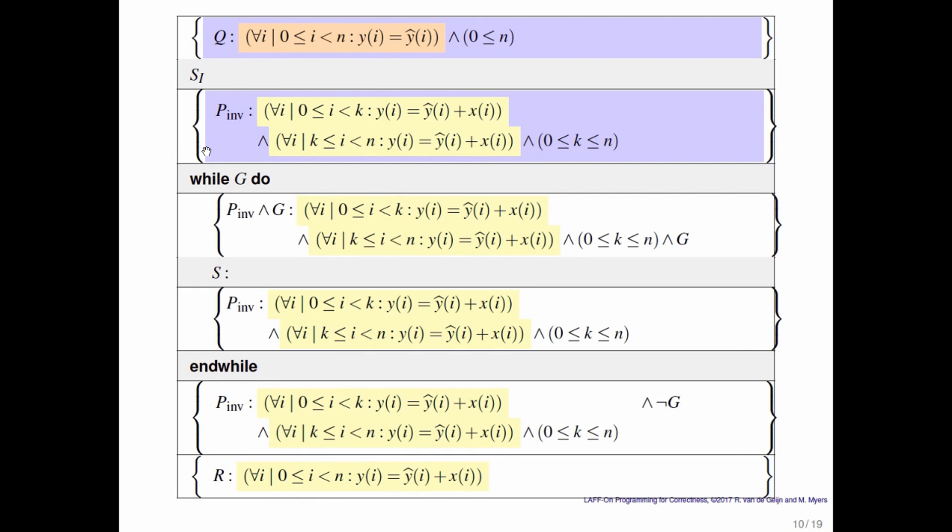You can also go to the top and say, what if we pick candidate D? Candidate D was that the first K entries have already been updated and the remainder of the entries have been updated as well. Well, notice that there is no initialization short of actually going and computing everything that will put you in a state where the loop invariant is true. So here we can't find a simple initialization that actually puts us in a state where the loop invariant is true. And therefore, that is not a valid loop invariant either.